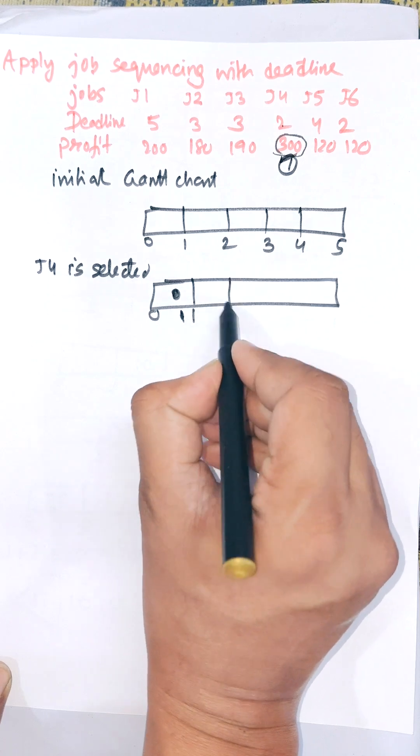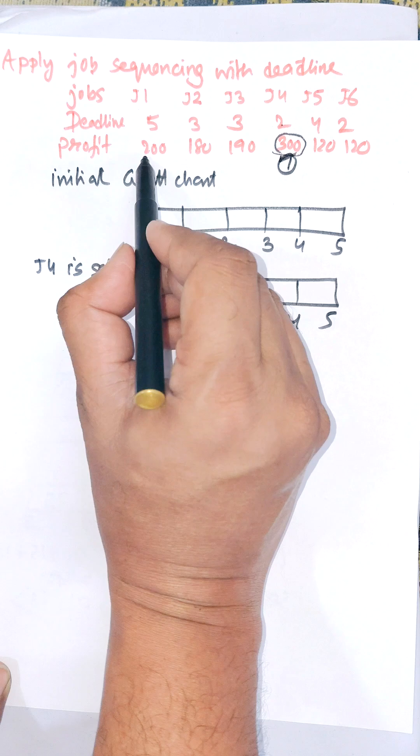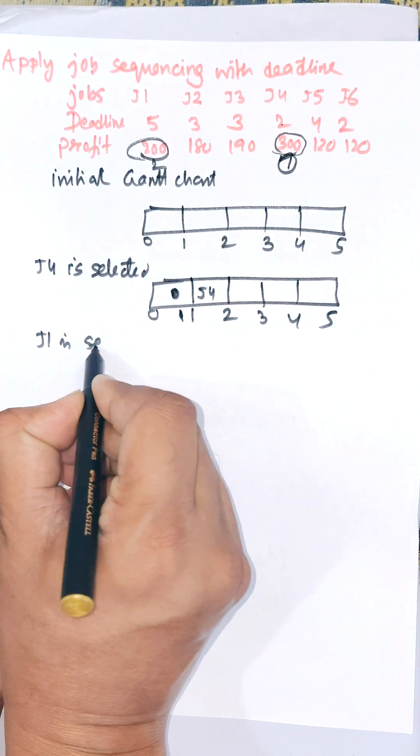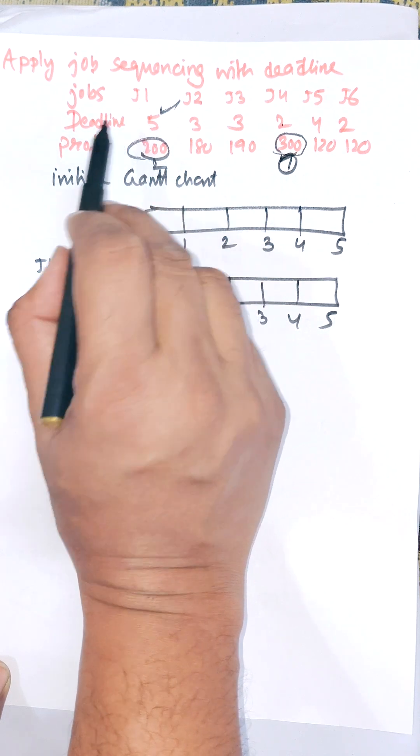Next maximum profit is 200, so J1 is selected. J1 is selected, deadline for J1 is 5, so we will select the time slot 4 to 5. This is 1 to 2 and we need to select J1 in between 4 to 5.